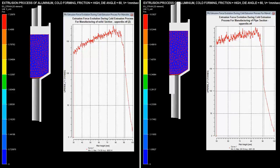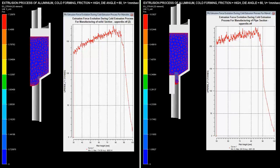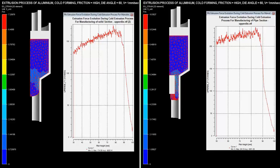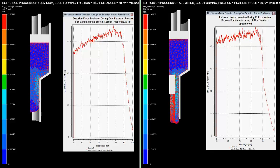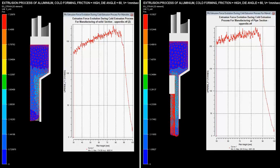Extrusion forces with respect to the billet height are shown on the graph. These forces are maximum when there is sudden change in the area of cross section of the billet.